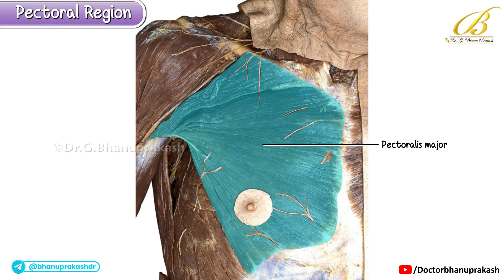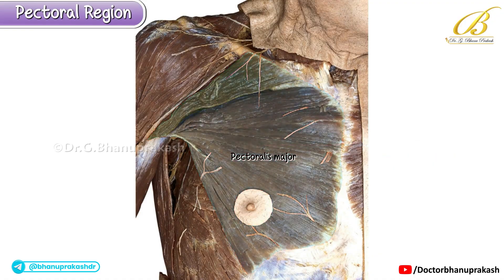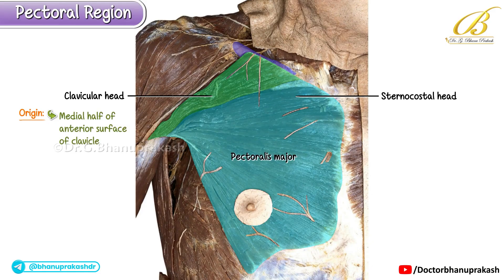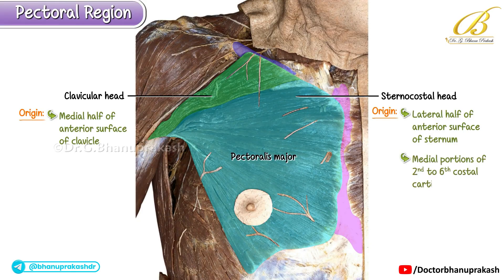Let's focus on the pectoralis major, the most prominent and largest muscle in this region. It is a broad fan-shaped muscle that occupies much of the anterior chest wall. The pectoralis major arises from two distinct heads: the clavicular head, originating from the medial half of the anterior surface of the clavicle; and the sternocostal head, arising from the lateral half of the anterior surface of the sternum, the medial portions of the second to sixth costal cartilage, and also from the aponeurosis of the external oblique muscle of the abdomen.